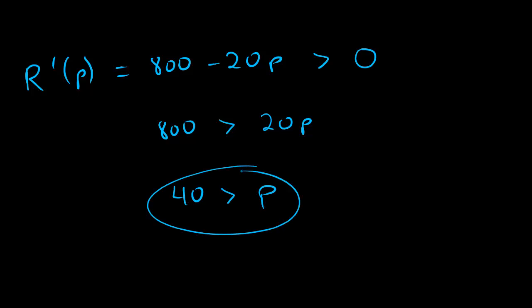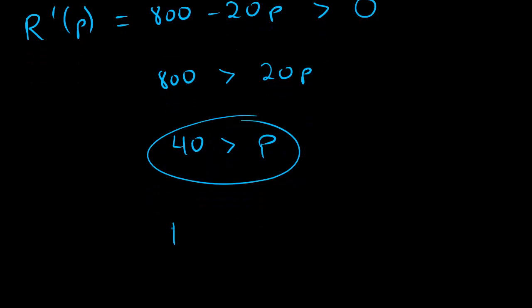And so what we find out is that as long as our price is less than $40, if we even flip that, then maybe it looks more normal. As long as our price is less than $40, our revenue is locally increasing. And what it means that we're locally increasing is that if we charge a little bit more for our price, we will gain a little bit more for our revenue.